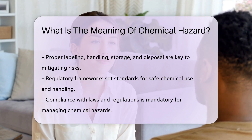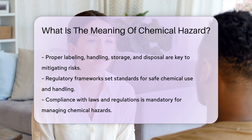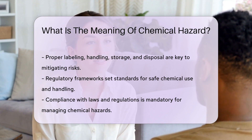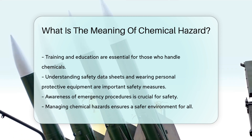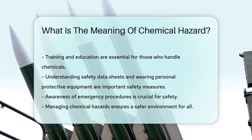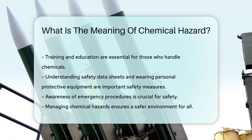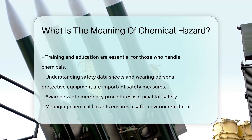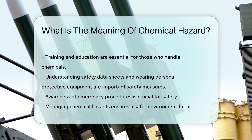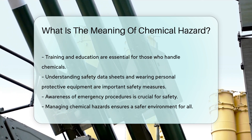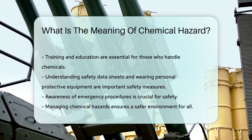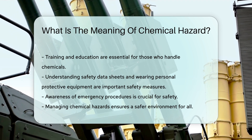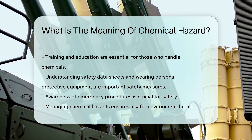Training and education are also key components in managing chemical hazards. Workers and individuals who handle chemicals must be aware of the risks and know how to protect themselves and their environment. This includes understanding safety data sheets, wearing appropriate personal protective equipment, and knowing emergency procedures.